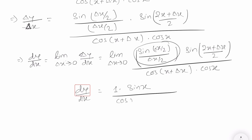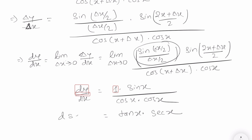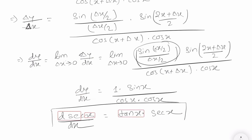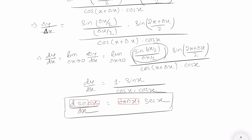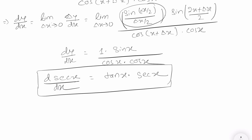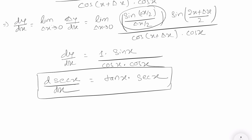The sin(delta x/2)/(delta x/2) portion becomes 1, and delta x becomes 0, giving dy/dx equals sin x divided by cos x times cos x, which equals tan x times sec x. So the derivative of sec x with respect to x is sec x times tan x. This is our final answer. I hope you enjoyed this lecture — do subscribe to Civil Learning Online, see you in the next video, stay safe and take care!